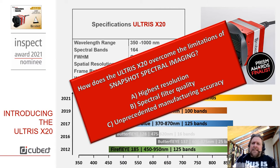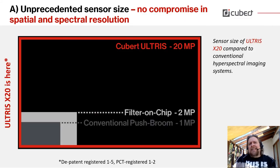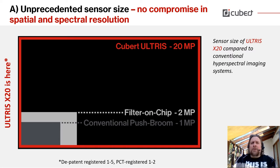First of all, how does the Altwas X20 help to overcome the limitations of snapshot spectral imaging? We have an unprecedented sensor size. The Altwas X20 works with a 20 megapixel sensor, which is pretty unique in the whole market compared to all other approaches, and gives you that extra advantage in regards to the spectral resolution compromise you have to make.